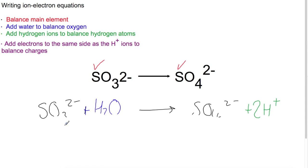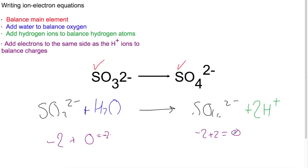Now we check the charges to determine how many electrons to add. On the left: −2 plus 0 equals −2. On the right: −2 plus 2 equals 0. We add electrons to the same side as the H⁺ ions to balance the charge, so we need to add 2 electrons to the right.